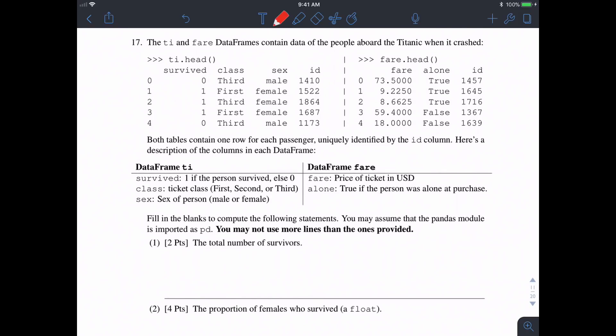So in one, we want the total number of survivors. Well, we see in the TI table, survived is equal to one for people who did survive, and zero for people who did not. So if we just sum the entire survived column, we should get the total number of people who survived. So what we can do is do TI at the column survived, and take the sum of that. Relatively straightforward.